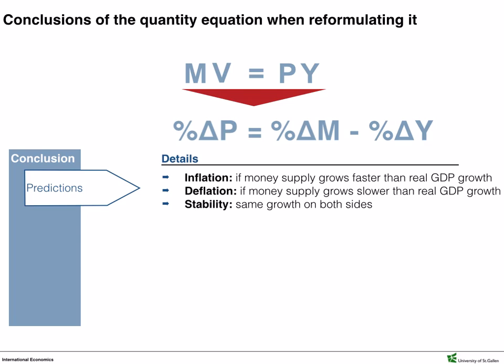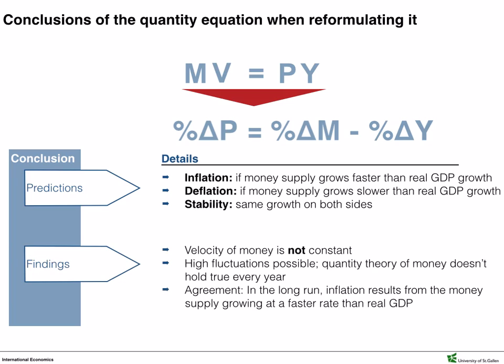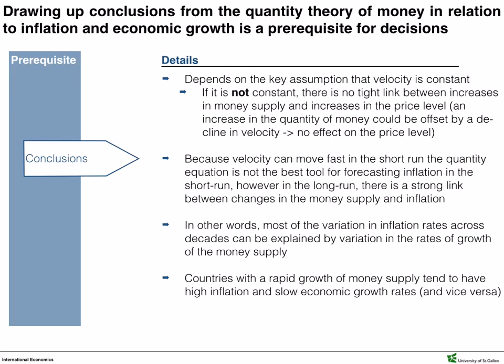Now, the issue today is that higher usage of electronic payment systems and higher interest rates typically result in a higher velocity of money. So Irving Fisher was not entirely correct — the velocity of money is not constant. In the long run though, inflation results from the money supply growing at a faster rate than real GDP. The prerequisite for any monetary policy is to understand conclusions from the quantity theory of money. It heavily depends on the key assumption that velocity is constant. If it is not constant, there is no direct link between increases in money supply and increase of the price level, because an increase in the quantity of money could be offset by a decline in velocity.